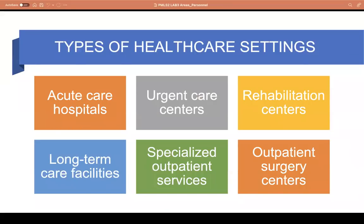To accomplish our first objective — identifying the different types of healthcare settings — the term healthcare setting represents a broad array of services and places where healthcare occurs, including acute care hospitals. Acute care hospitals provide short-term patient care. The term acute care encompasses a range of clinical healthcare functions like emergency medicine, trauma care, pre-hospital emergency care, acute care surgery, critical care, and short-term inpatient stabilization.